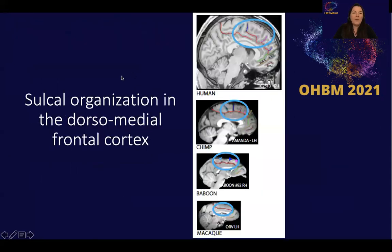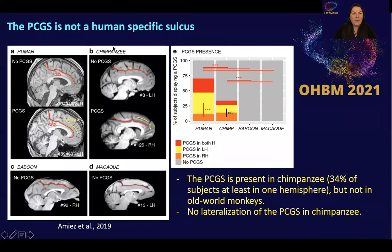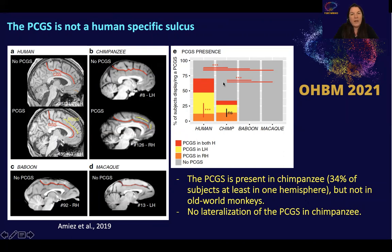Looking at the dorsal medial frontal cortex, the first finding is that the paracingulate sulcus, which was thought to be a human-specific sulcus, is in fact not. We observe this sulcus also in chimpanzees. Two main differences can be observed: first, in humans we see this sulcus in about 70% of subjects in at least one hemisphere, and this percentage falls to 34% in chimpanzees. Second, it is lateralized to the left hemisphere in humans, but equally present in left and right hemispheres in chimpanzees.